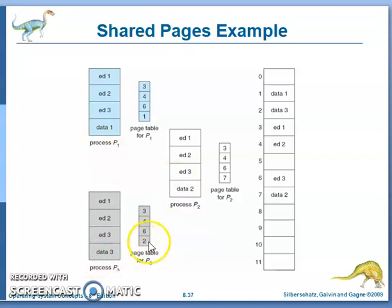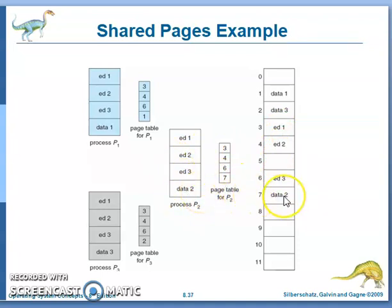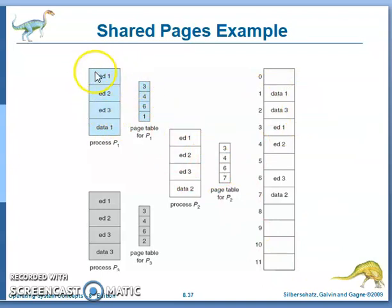Process P2 also shares the same editor frames — frames 3, 4, and 6 — with data 2 at frame 7. Without sharing, we would require 4 + 4 + 4 = 12 frames. With sharing, only 3 frames for the editors are needed, plus 3 separate data frames, totaling 6 frames. Sharing saves memory.